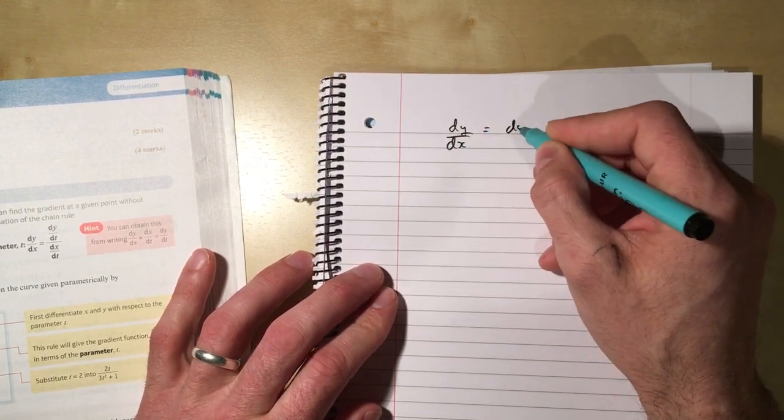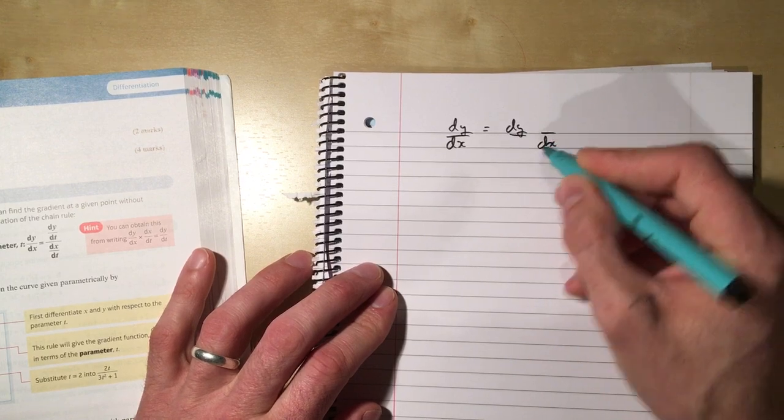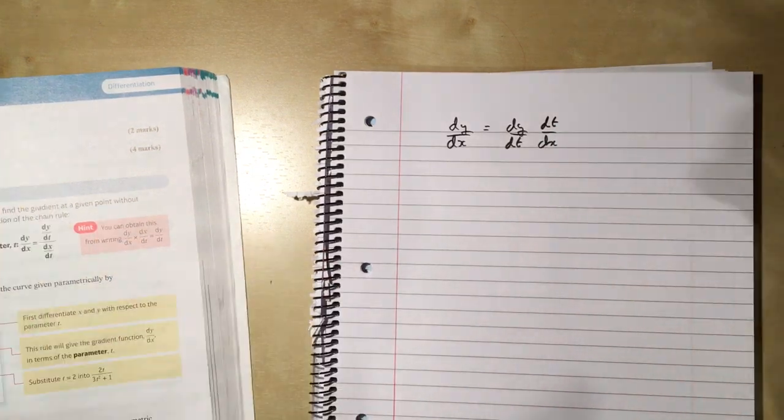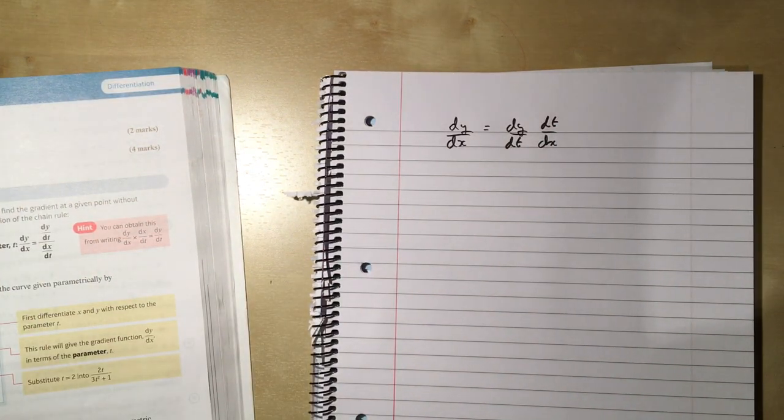dy/dx equals dy/dt times dt/dx. We normally write du here, but for now I'm just going to change it from u to t. It doesn't matter, it's any old letter, isn't it? So dy/dt, dt/dx.